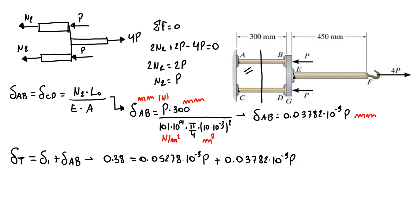By the exercise, I have 0.38 millimeters equals 0.05278 times 10 to the minus 3 P plus 0.03782 times 10 to the minus 3 P. Here I have P equals 0.38 over 0.0906 times 10 to the minus 3. I found that my P is 4.19 times 10 to the 3 newtons, or 4.19 kilonewtons. This is our final answer for problem 4.